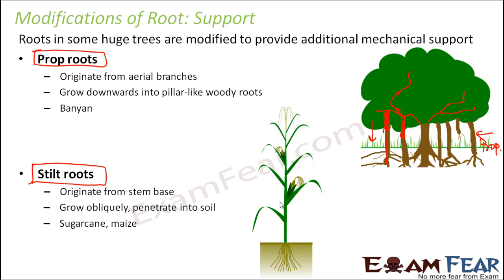In these plants, when you have a large number of plants, you need some stability. Certain roots originate from the stem base and grow obliquely, penetrating into the soil. It is not necessary that they go very deep — they start spreading obliquely and laterally, and that's how they give support to the plant. These are called stilt roots, which are also supporting roots.